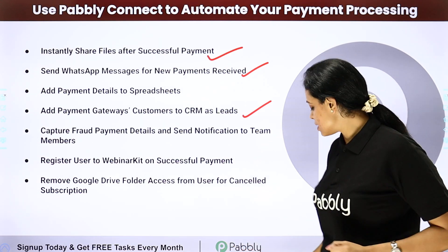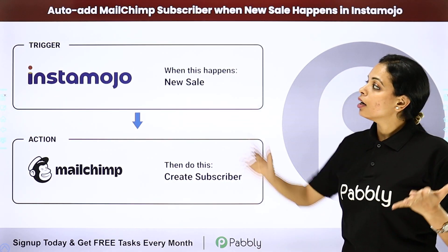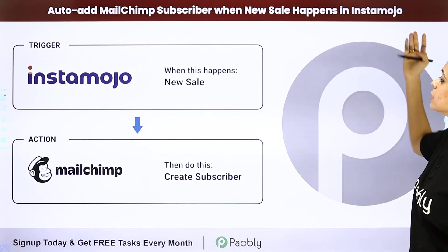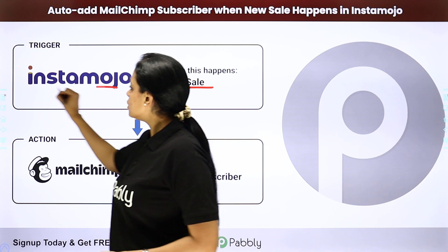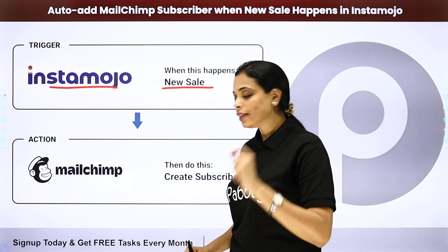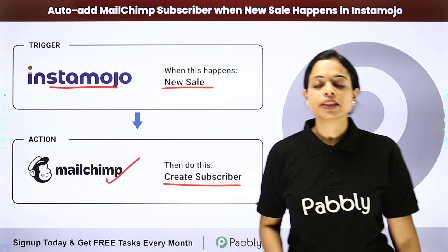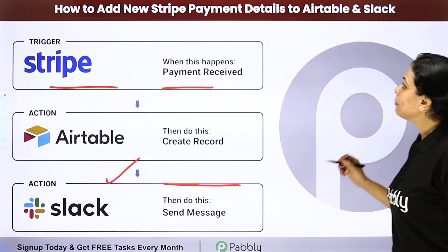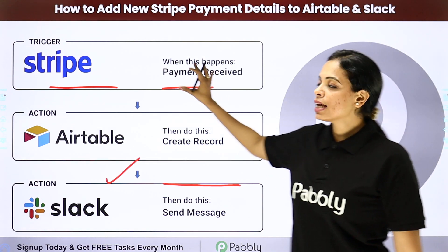Let's look at some examples. The first one is auto-adding a MailChimp subscriber when a new sale happens in Instamojo. The moment a payment is done on Instamojo, which is a payment gateway, a subscriber is automatically created on MailChimp, which is an email marketing tool.